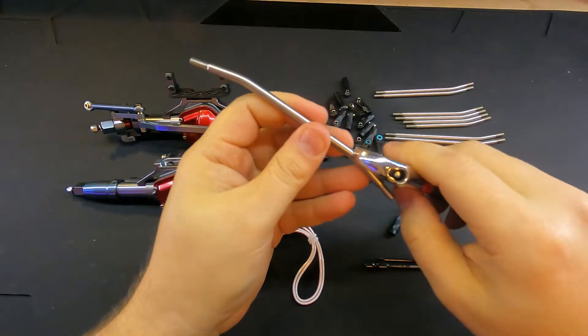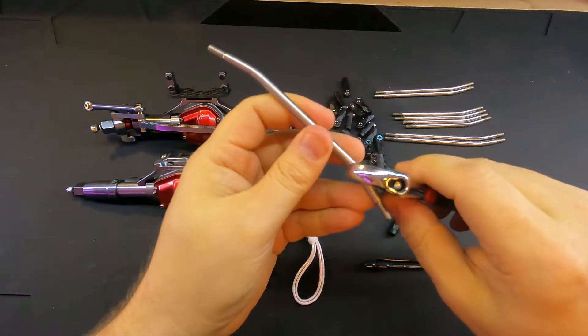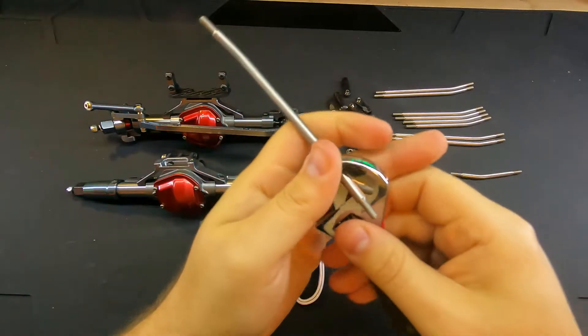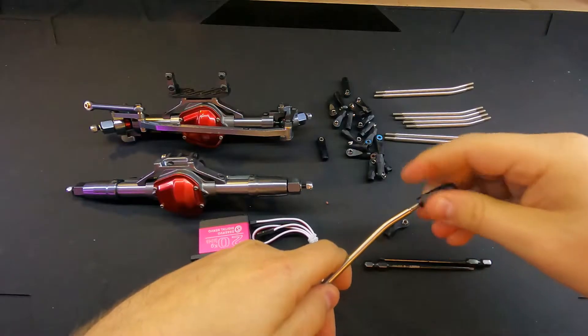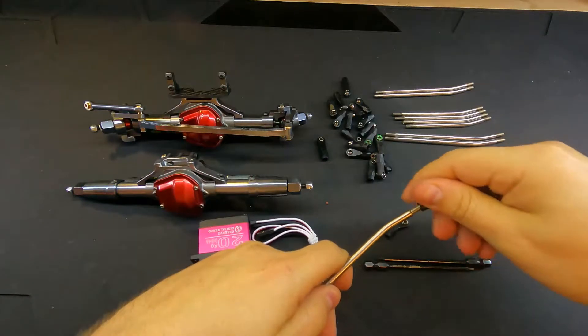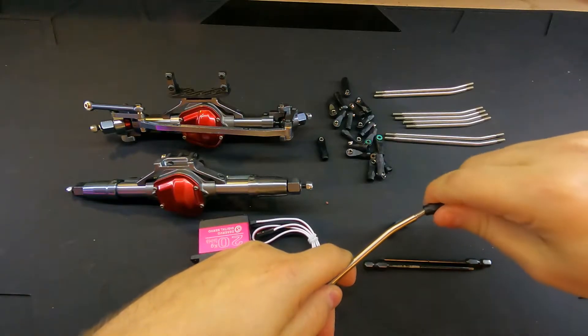Now if you use the adjustable crescent wrench as a sort of holder for your rod, you'll notice that when we go to thread on our rod end here, it will hold that rod end in place so that you can twist on your link.